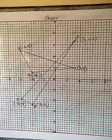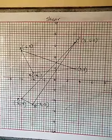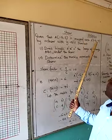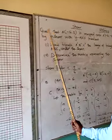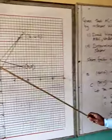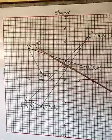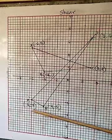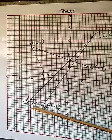Point A has been mapped onto A prime. A prime is negative 6, negative 4. Looking at our diagram, the point negative 6, 5 has moved to negative 4, negative 5.